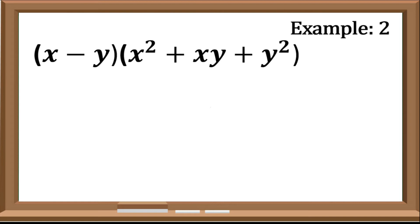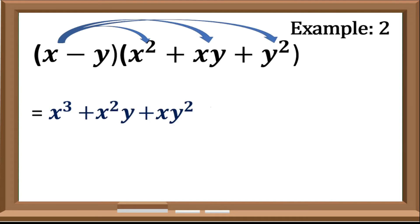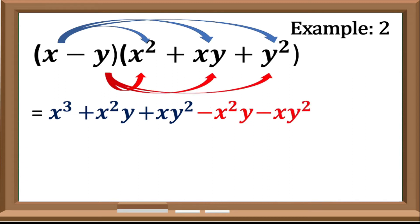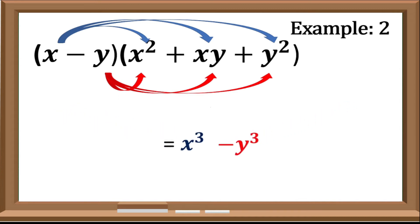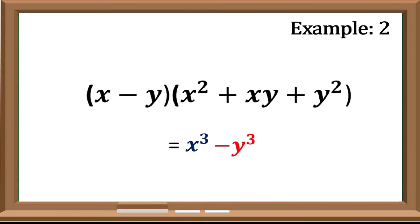Let us take another example. We have the quantity of x minus y, times the quantity of x squared plus xy plus y squared. Using the distributive property, we have x cube plus x squared y plus xy squared minus x squared y minus xy squared minus y cube. As you can observe, there are terms that are the same but with different signs, so we can cancel them out. Positive x squared y and negative x squared y cancel out, as well as positive xy squared and negative xy squared. So the remaining product is x cube minus y cube.